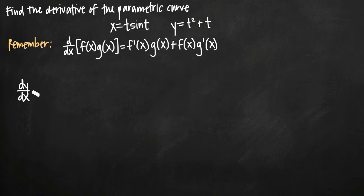Normally when we find dy/dx, we just take the derivative of our function because our function is a function for y in terms of x. But in this case we have two functions, one for x and one for y, and they're both in terms of t.